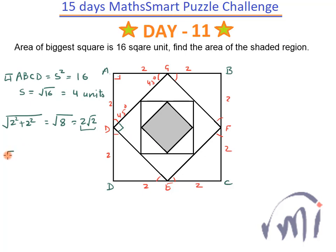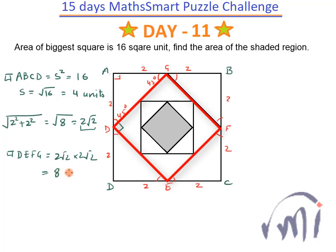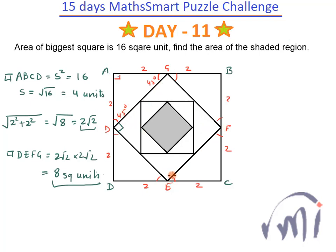So DEFG is a square whose each side is equal to 2√2. The area of square DEFG equals 2√2 multiplied by 2√2, which equals 8 square units. The area of the outer square was 16 square units, and when we join the midpoints of that original square we get another square whose area is exactly half of the outer square.